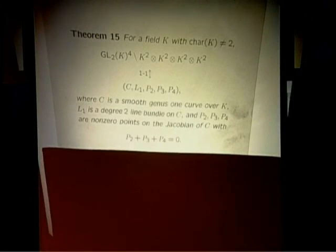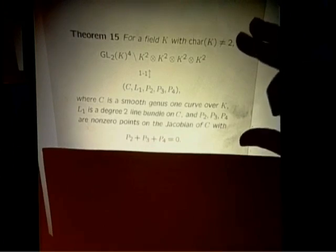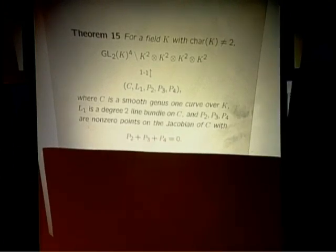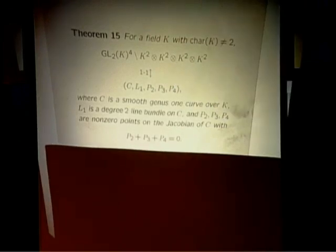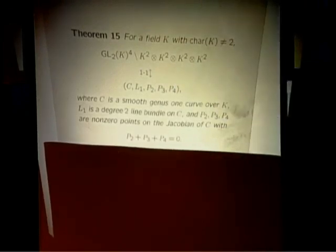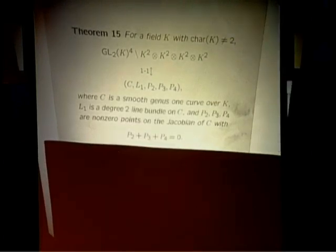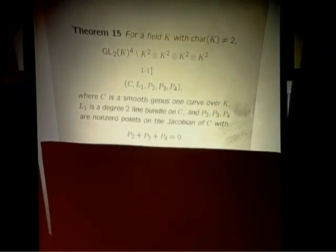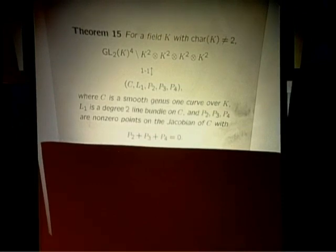The theorem is that if you have any field K with characteristic not equal to 2, and you look at the space of hypercubes — K^2 tensor K^2 tensor K^2 tensor K^2 — modulo the action of row operations, column operations, and the other direction operations, those orbits are in one-to-one correspondence with: C a genus 1 curve, a degree two line bundle L1 corresponding to one of the double covers, and three non-zero points P2, P3, P4 on the Jacobian with the relation P2 + P3 + P4 = 0.